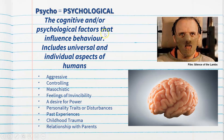The cognitive and/or psychological factors that influence behaviour include universal and individual aspects of humans — some we all possess and some are unique to the individual. This includes thinking, cognition, perception, and memory, but also individual differences such as personality. Someone may have a more aggressive personality than somebody else, or they may be very controlling in their personality, or have higher levels of masochistic traits compared to someone else.